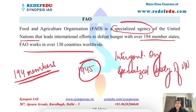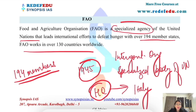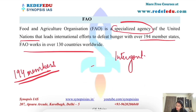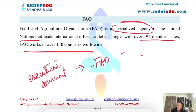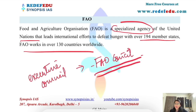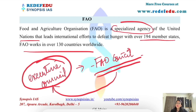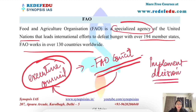The headquarters of FAO is located in Rome, Italy. Regarding its structure, FAO has an Executive Council. This Executive Council is elected by FAO's member countries, and it is responsible for actually implementing the decisions taken by the Food and Agriculture Organization.